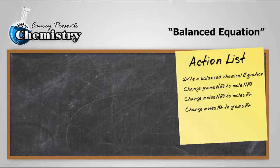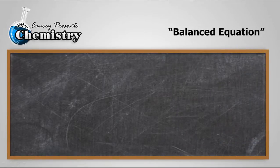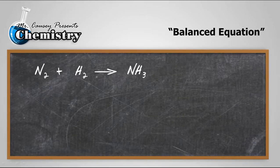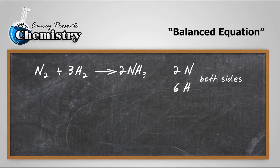Let's put up our action list. First thing I want to do is write a balanced chemical equation. So, I'll do that. Here's my chemical equation. Nitrogen plus hydrogen gives me ammonia, but it's not balanced. But if you'll notice if I put a coefficient of a 3 there and a coefficient of a 2 there, that will balance everything on both sides. I'll have 2 nitrogen and 6 hydrogen on each side and that makes it balanced.